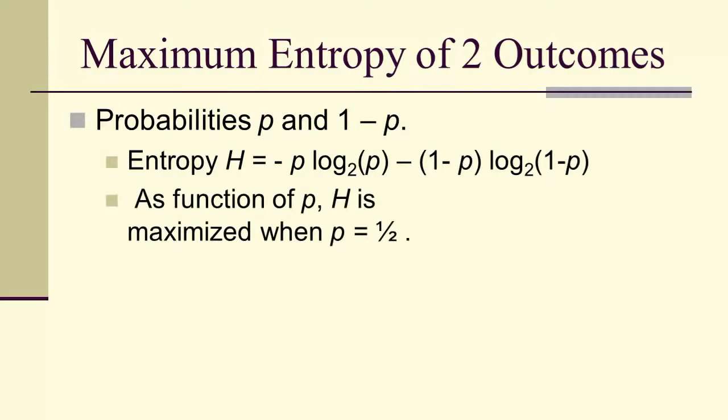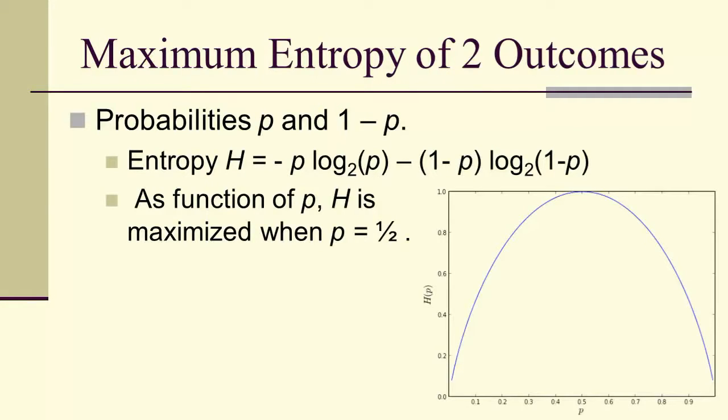As a function of p, the entropy is maximized when p equals a half. You can see that here. Here's the actual entropy as a function of p, and when p is equal to a half...